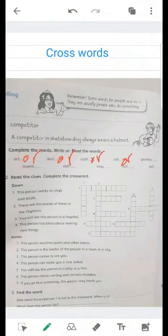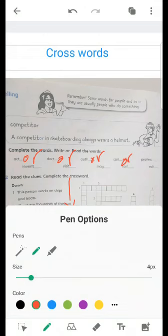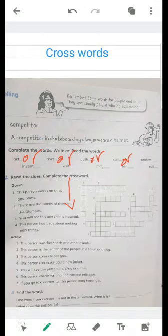We are going to answer these puzzles or these definitions. Then write the letters of the word in each square. Number one, down. You have one down. This person works on ships and boats. A person who works on ships or boats, so he is a sailor. So we write sailor.